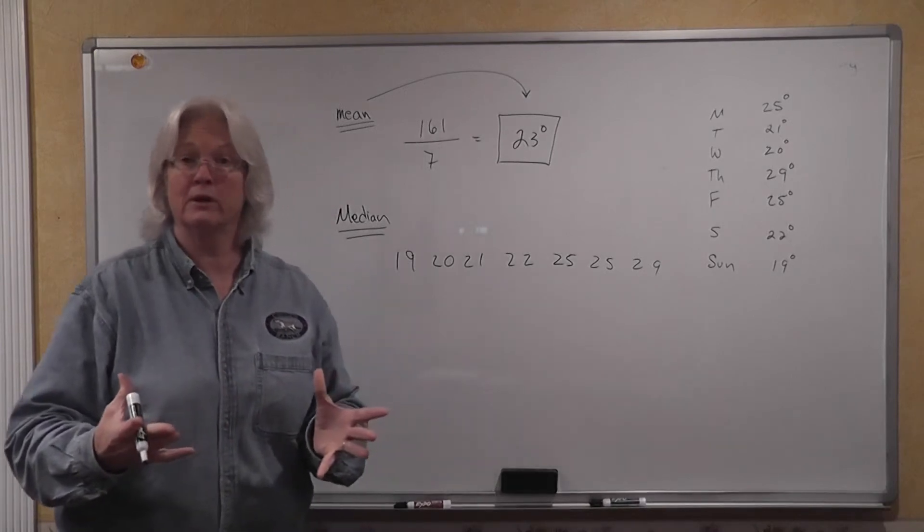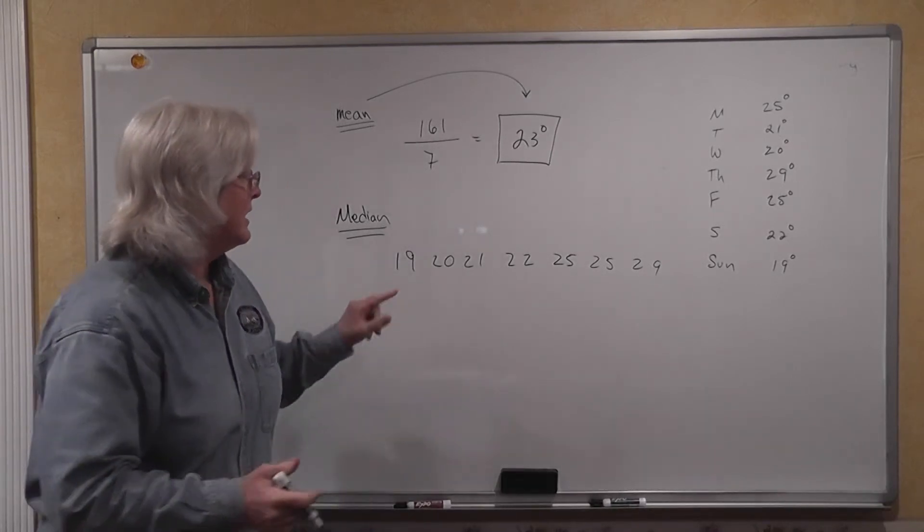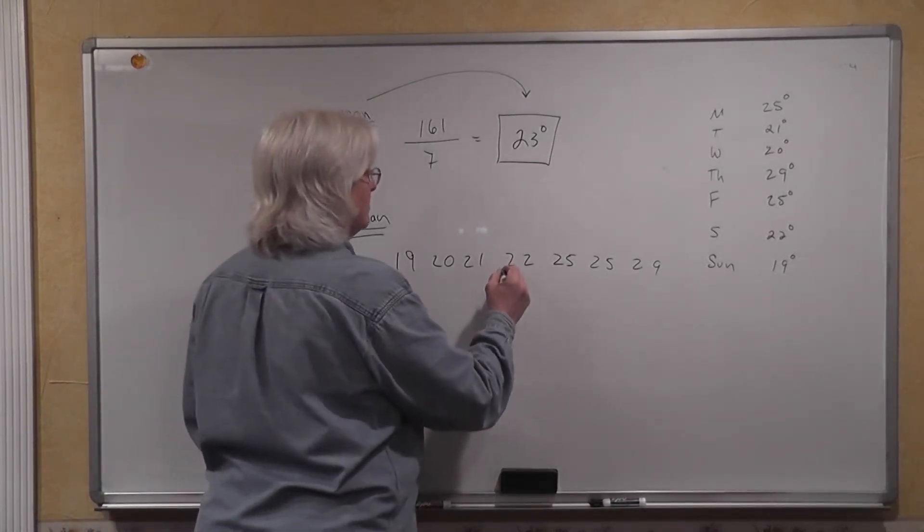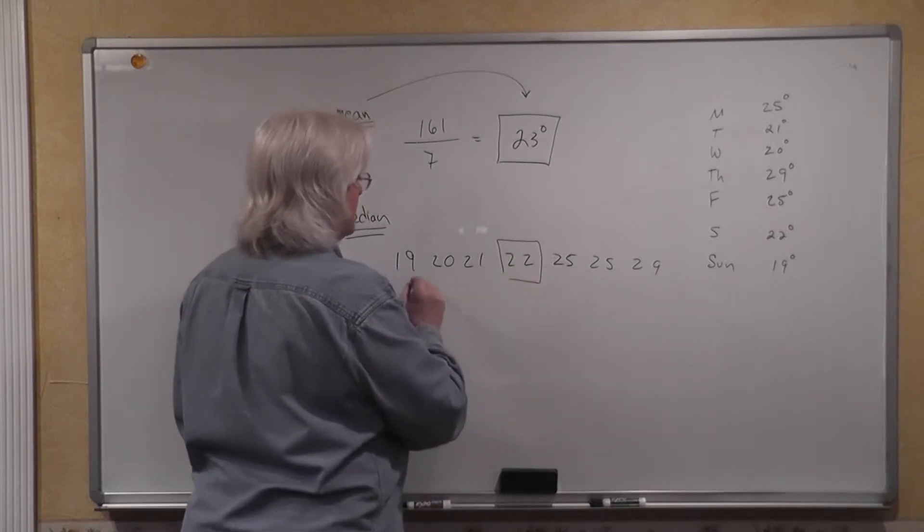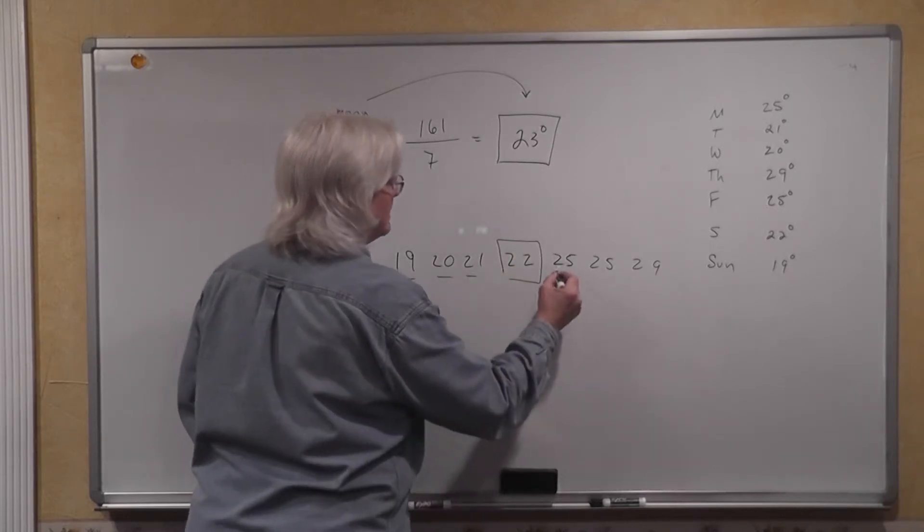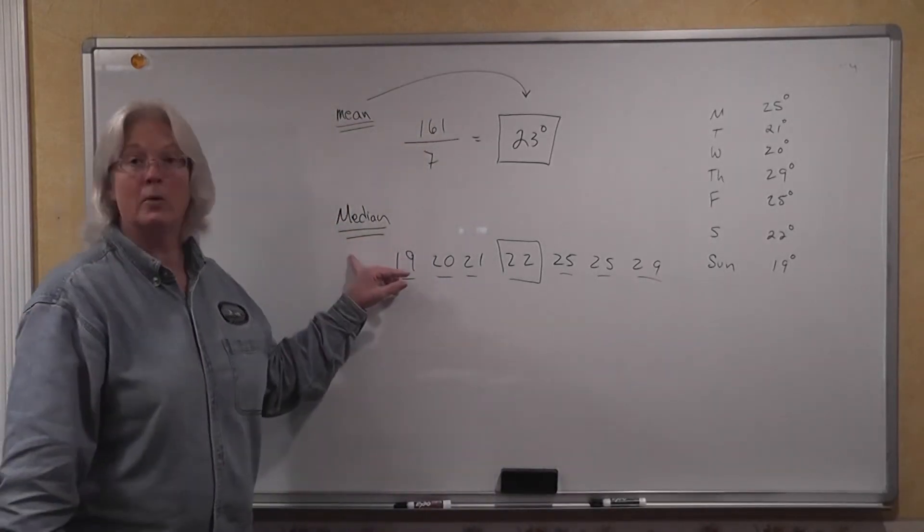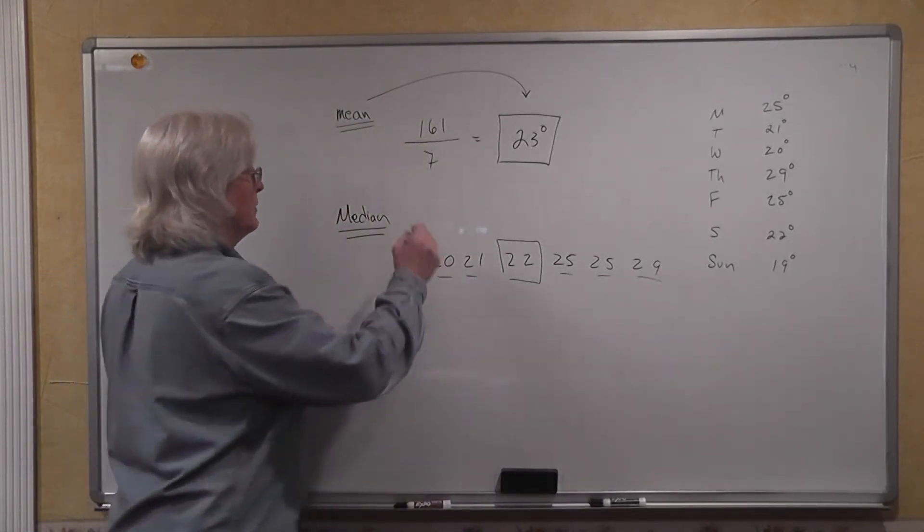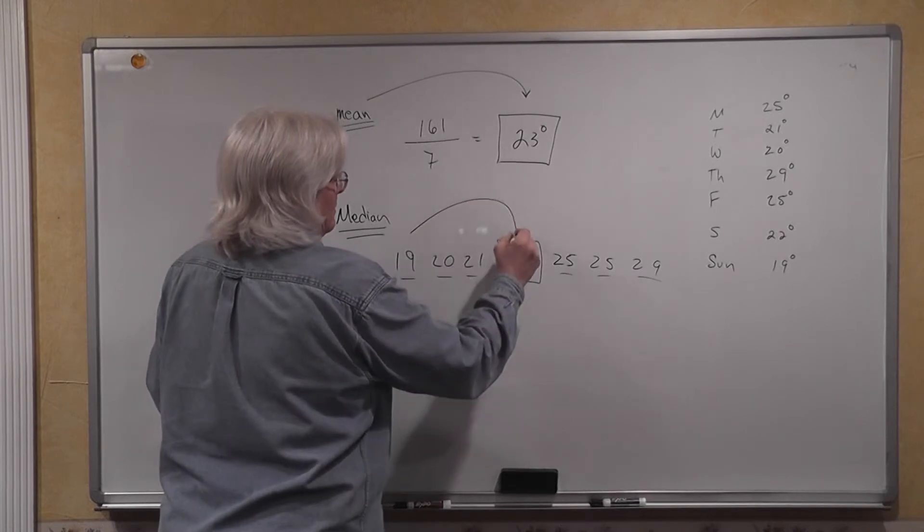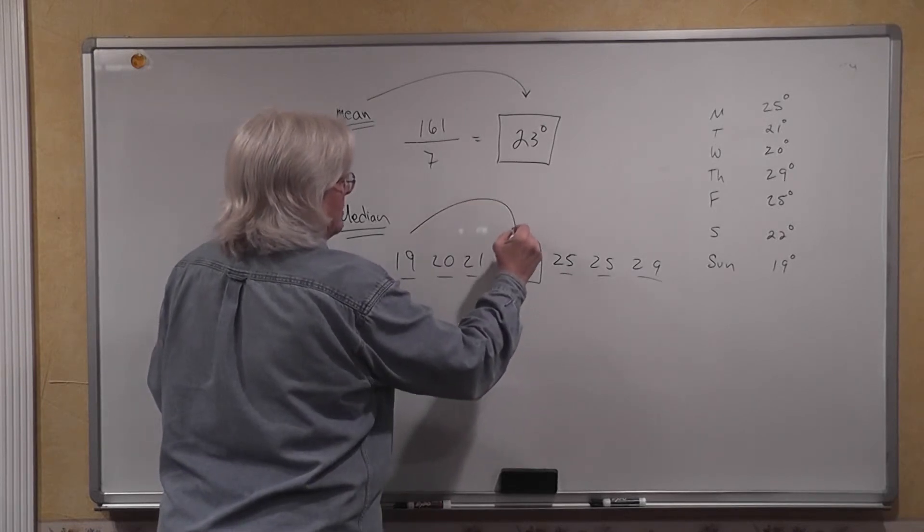The median is the middle number. We have seven numbers. So we're going to have one number in the middle and three numbers on either side. So we have our middle number here. Our median temperature for the week, for the middle one, was 22.